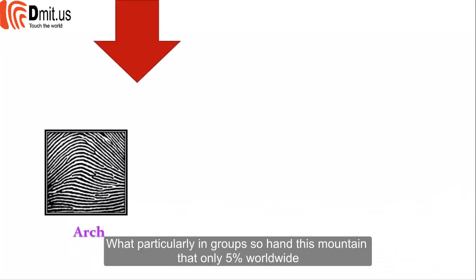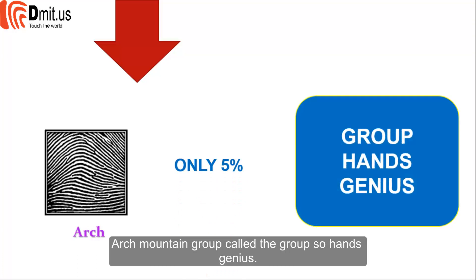What is particularly special about the Arch Group — the mountain group — that only 5% of people worldwide have it? The Arch Mountain Group is called the group of genius.